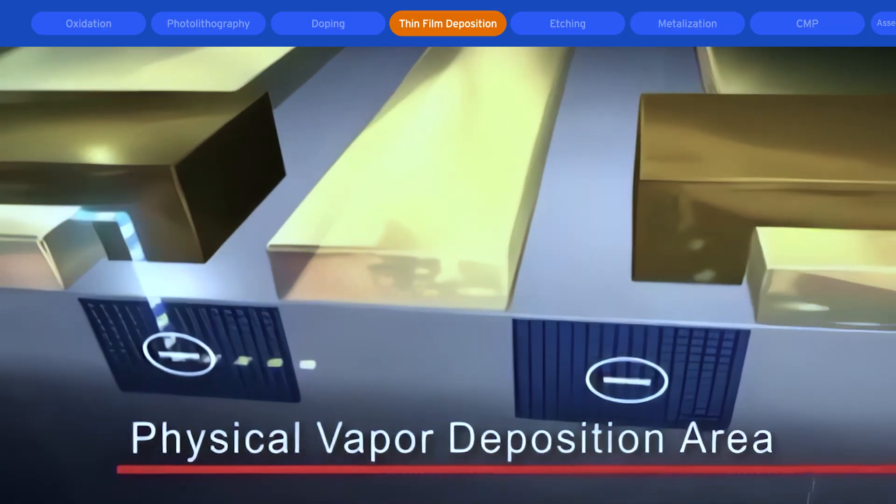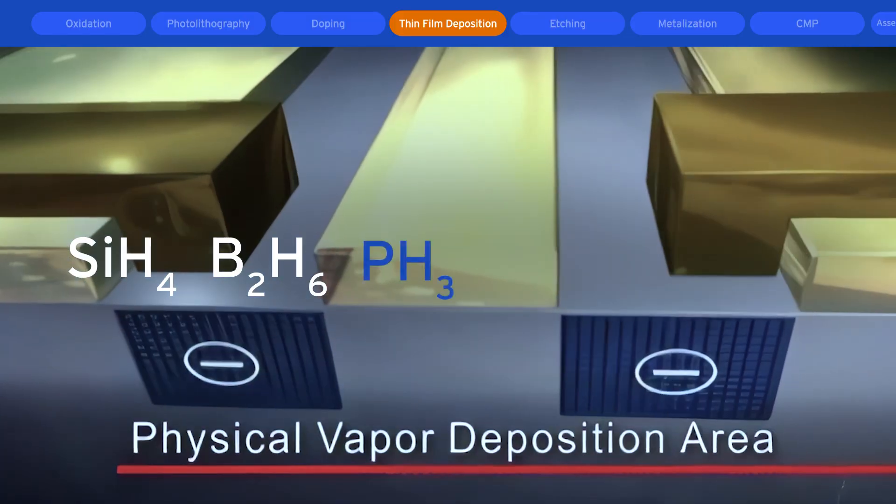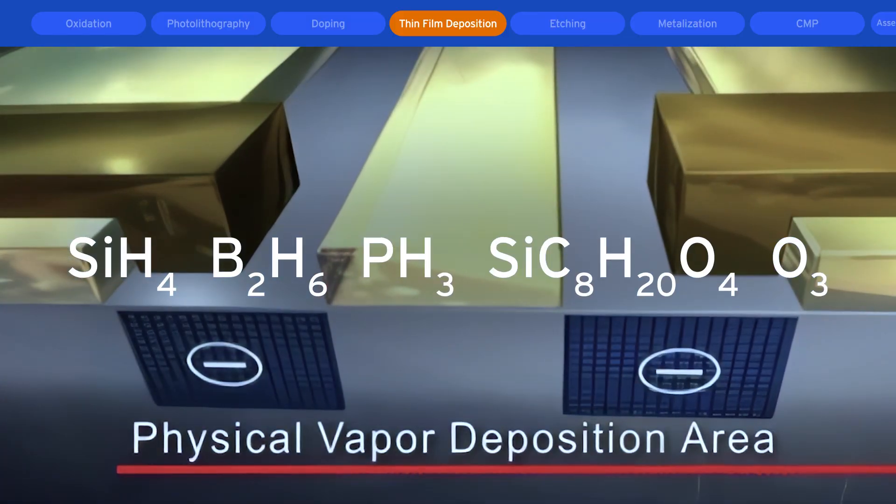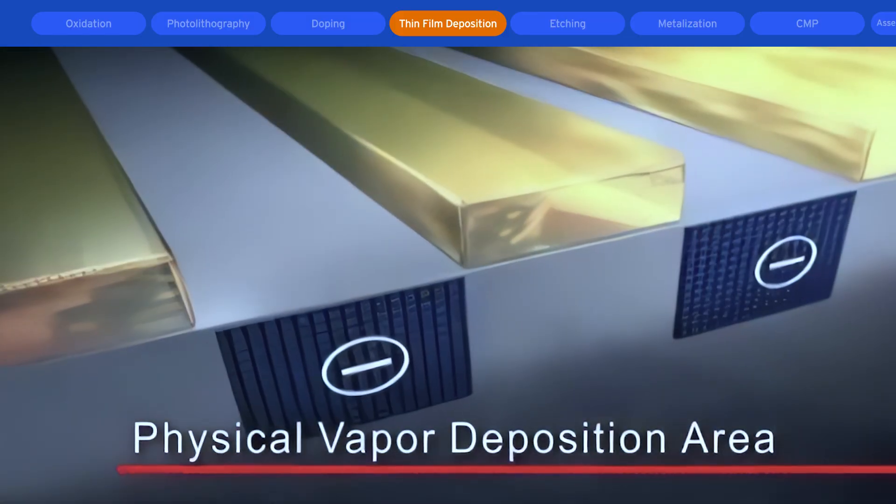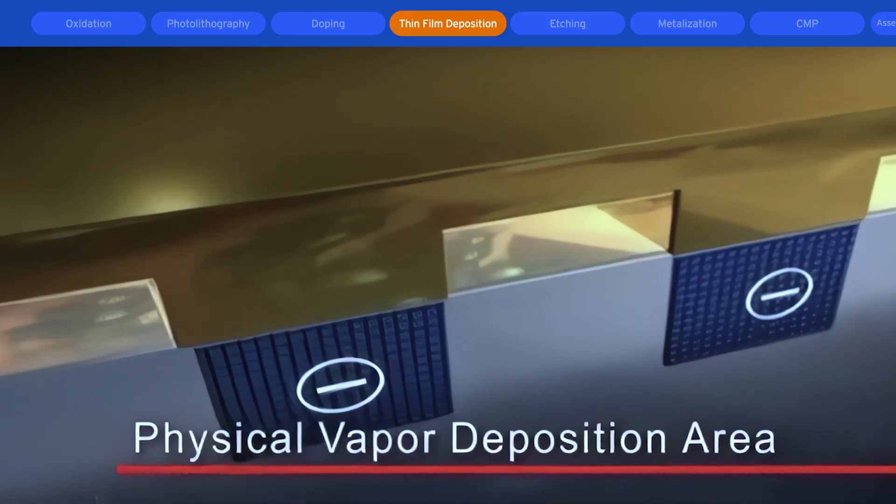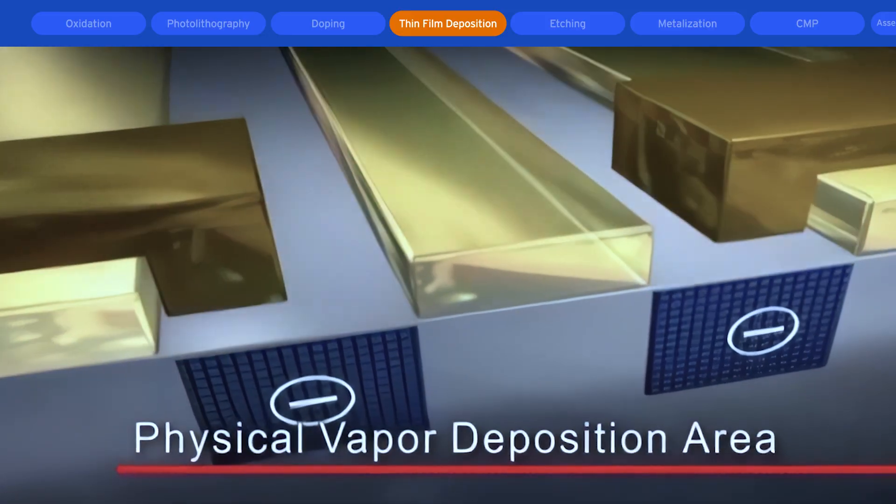Deposition chemicals include silane, diborane, phosphine, TEOS, and ozone or O3. Process chambers may be cleaned with gases such as nitrogen trifluoride or perfluoro compounds.